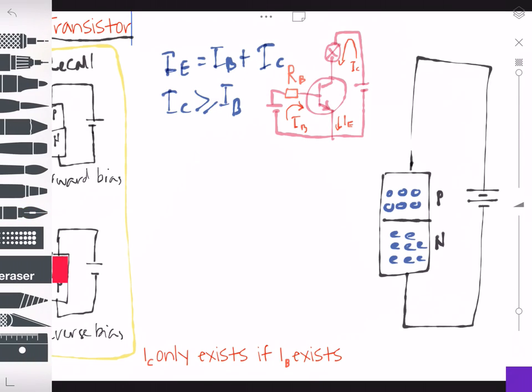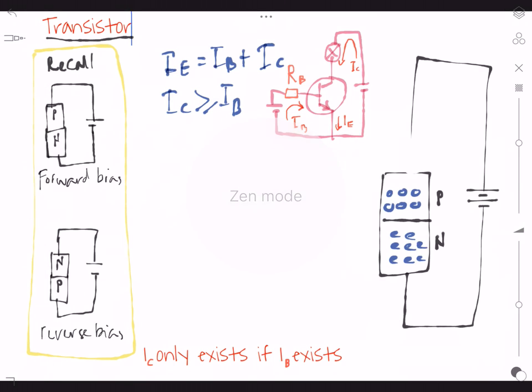What if I add another N type over here? What will happen? Let's say we have N type here so we have electrons.